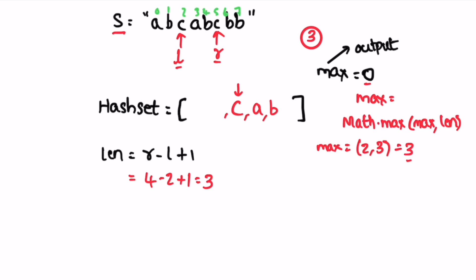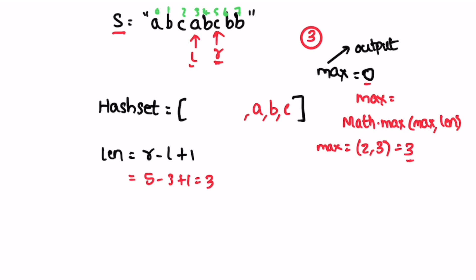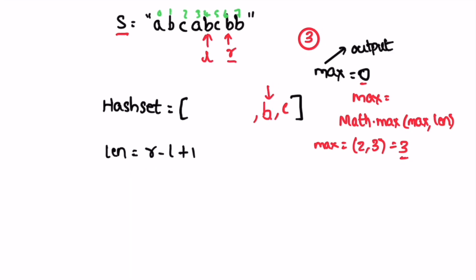Next iteration: 'c' is present in the set. Remove element at left — which is 'c' — then add 'c' from right, increment left. Length is 3, max stays 3. Continuing: the element at right is present again, so remove from left, increment left. When 'b' is still present, keep removing from left until the character at right is not in the set, then add it. Length becomes 2, which is less than 3, so max remains 3.